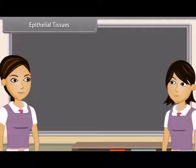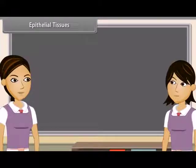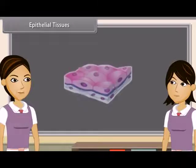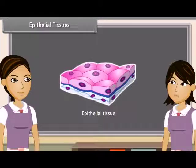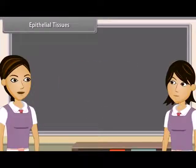Epithelial tissues: Tissues which cover all the organs of the body externally and also line hollow organs internally are known as epithelial tissue. The cells of epithelial tissue are tightly packed and form a continuous sheet. There is no intercellular space and matrix between these cells.